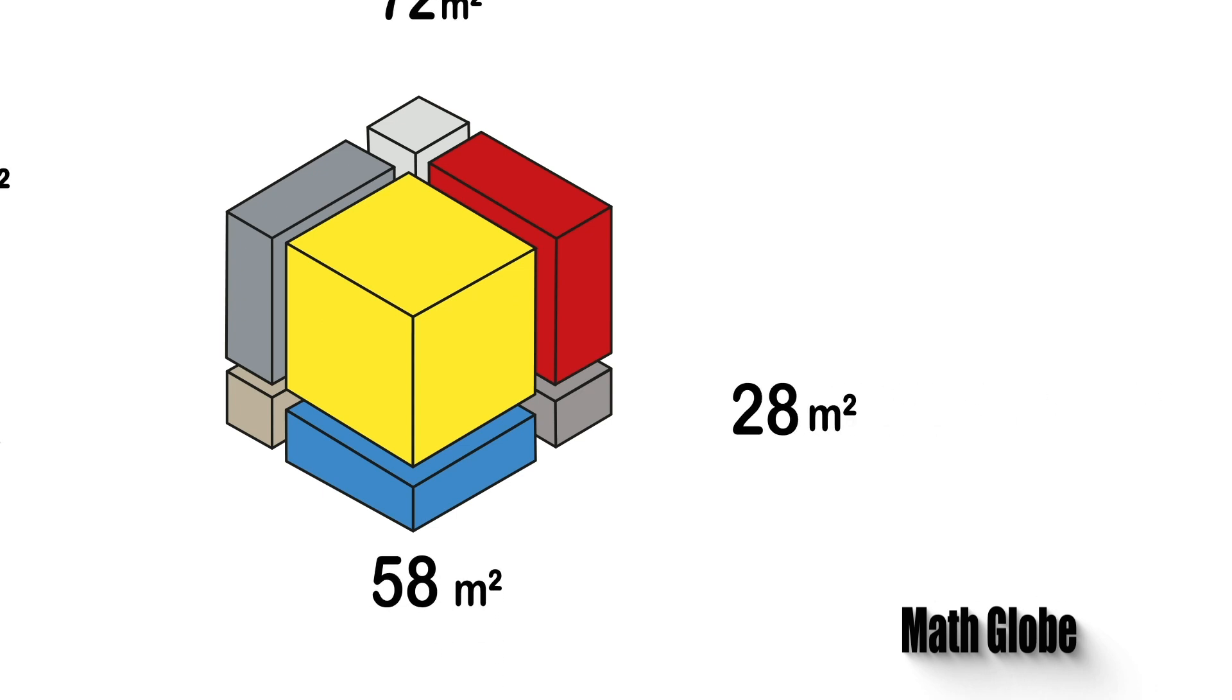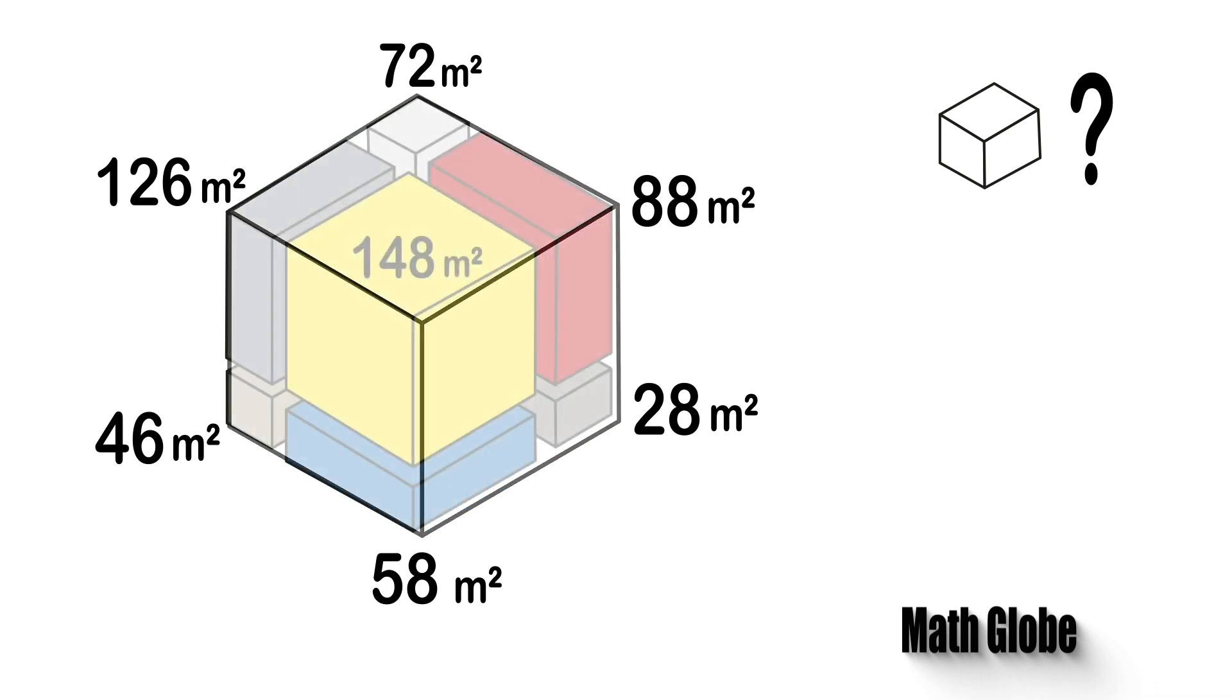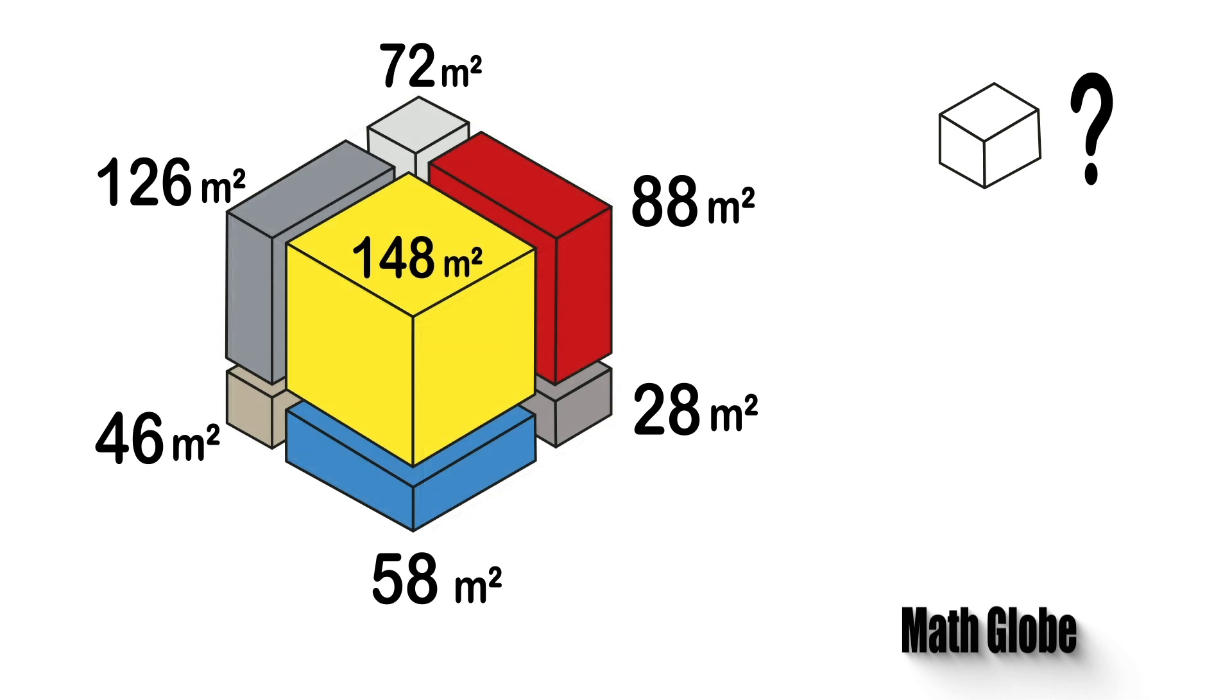And the areas of the 7 prisms are as follows. From this, we note that total surface area of the cube will be equal to half of the sum of the surface areas of the 8 prisms.